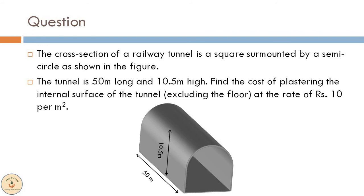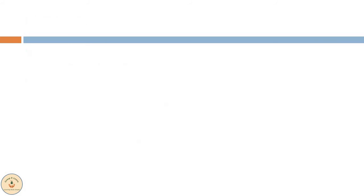As we can see in the figure, we have a tunnel which is 50 meters in length and 10.5 meters in height. We need to find the cost of plastering this tunnel at the rate of Rs 10 per meter square. We will have to calculate the surface area to solve this example.